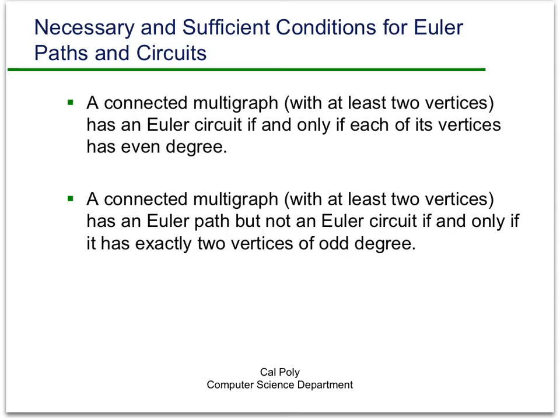So finally, we're ready for our next theorem. In a connected multigraph, it has an Euler circuit if and only if each of its vertices has even degree. It has an Euler path, but not an Euler circuit, if and only if it has exactly two vertices of odd degree, and all the rest of the vertices have even degree.